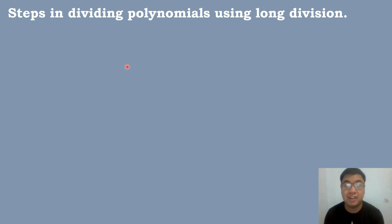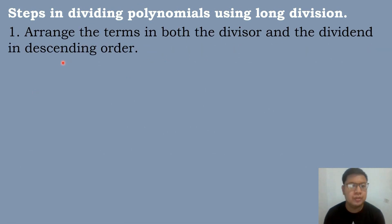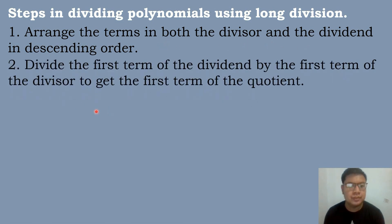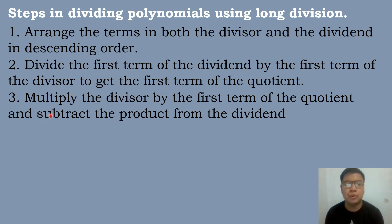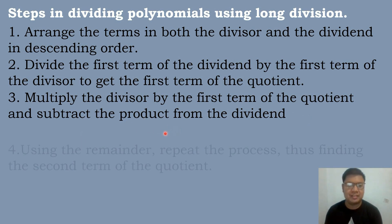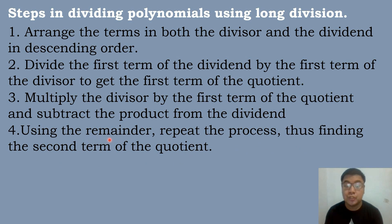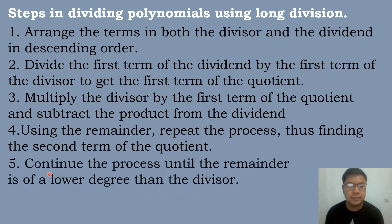So we have the steps in dividing polynomials using long division. First, arrange the terms in both the divisor and the dividend in descending order. Next, divide the first term of the dividend by the first term of the divisor to get the first term of the quotient. Third, multiply the divisor by the first term of the quotient and subtract the product from the dividend. Fourth, use the remainder and repeat the process, finding the second term of the quotient. Finally, continue the process until the remainder is of a lower degree than the divisor.